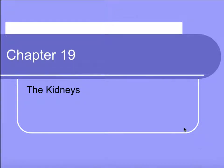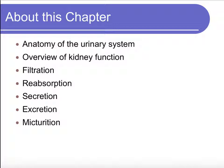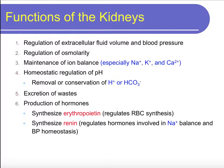Chapter 19, the kidneys. In this chapter, we'll talk about the anatomy of the urinary system, which will be a review. Then we'll look at kidney function as an overview, and then go into specifically filtration, reabsorption, secretion, excretion, and then the process of micturition.